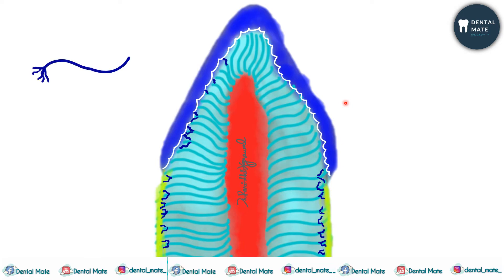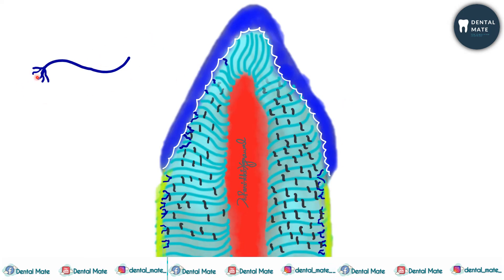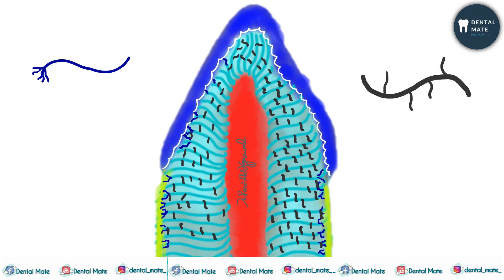Next are the lateral branches given out by the dentinal tubules. The lateral canaliculi or microtubules are present throughout the dentine. They have a diameter of one micrometer or less and they originate at right angles to the main tubules. There is a gap of one to two micrometers between two lateral branches, and they end in the intertubular dentine.